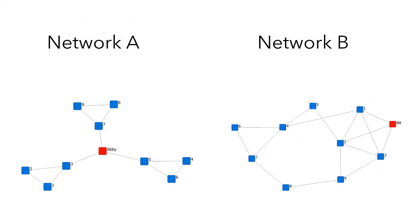If you analyze a network, it is very limited if you analyze only ego networks. This is because ego networks do not give you a big picture of how your friends are connected to one another. For example, the ego network for Abby and Bill are the same because they both have three direct ties. Without looking at how Abby's and Bill's friends are connected, you would not be able to conclude that Abby's network position is more advantageous than Bill's. So if possible, you should analyze a whole network instead of an ego network.